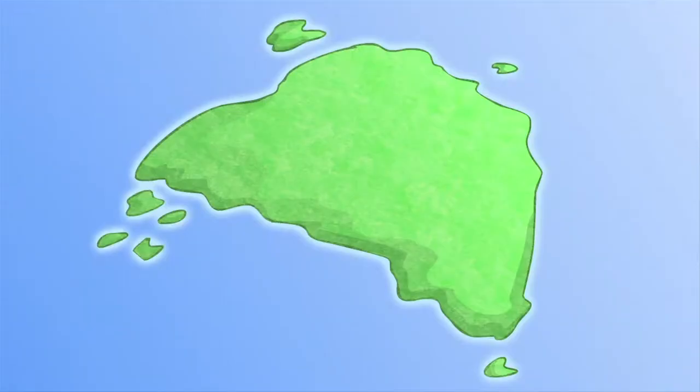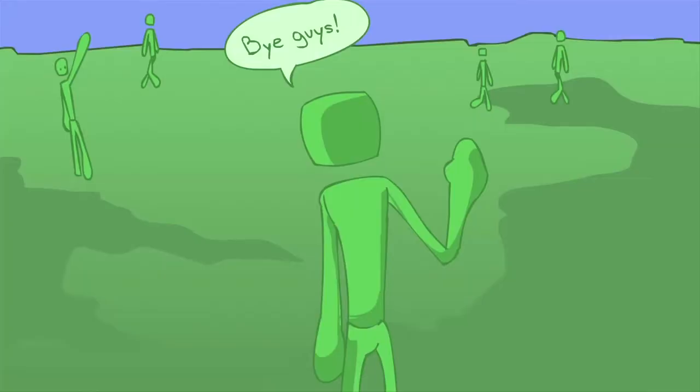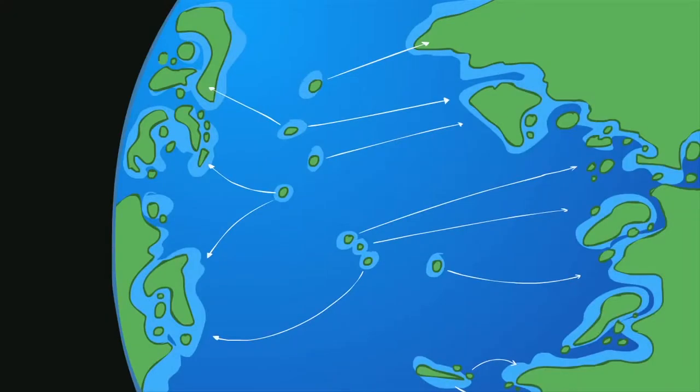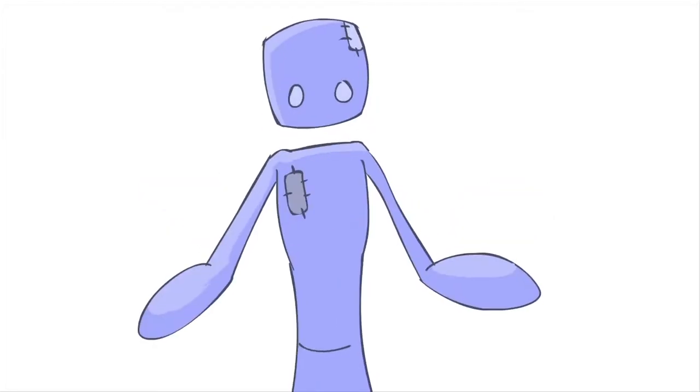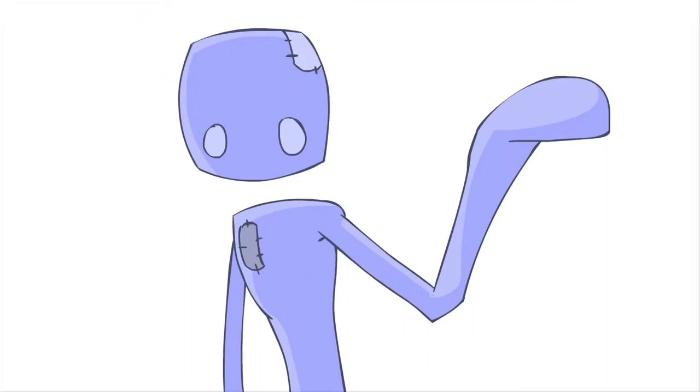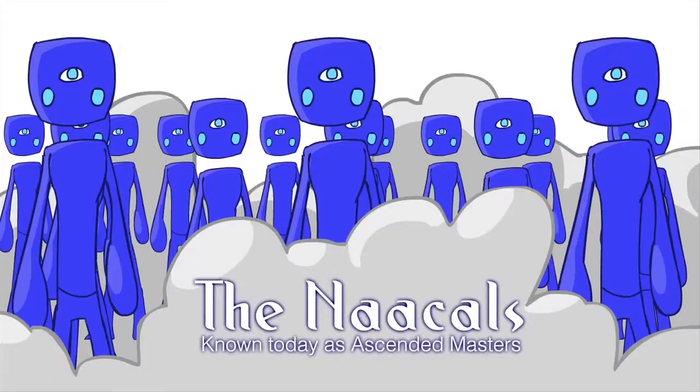After the sinking of Lemuria and the rising of Atlantis, at first the human race became scattered. We moved to various islands and continents all over the world because we didn't have a home. Yet, we didn't know where to go. At that time, there were about 1,000 humans at a very high consciousness, more than all of the rest. They were called the Nikals. Today, we know them as Ascended Masters.